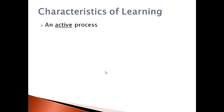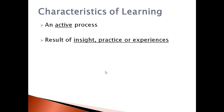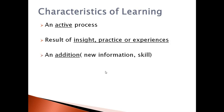Characteristics of learning: Learning is an active process — we must be active to learn something new. It is a result of insight, practice, and experience. Learning is a process of acquiring new information and skills. It is also an adjustment process — through learning, we can adjust to any situation properly.